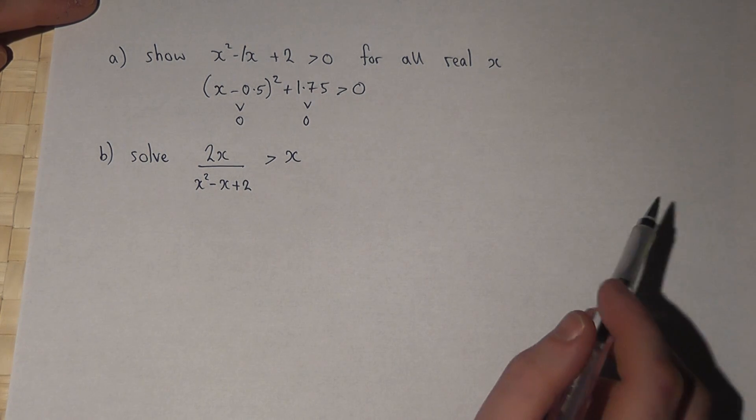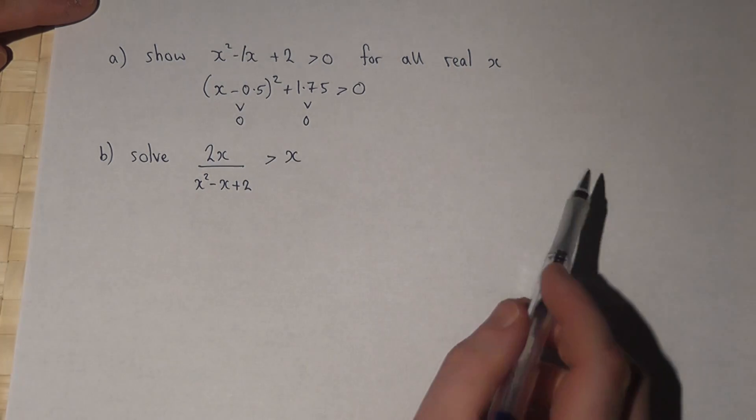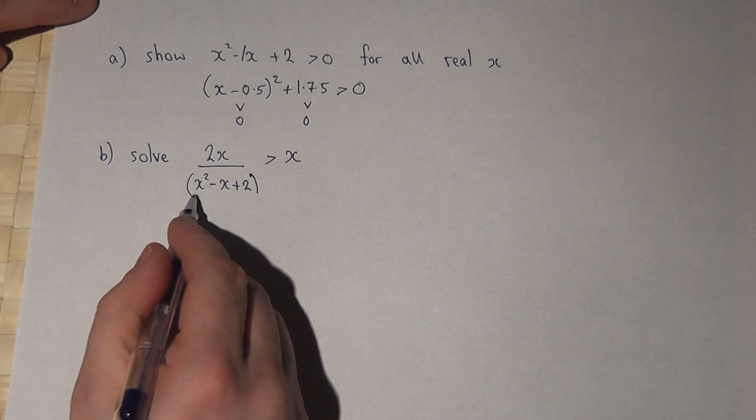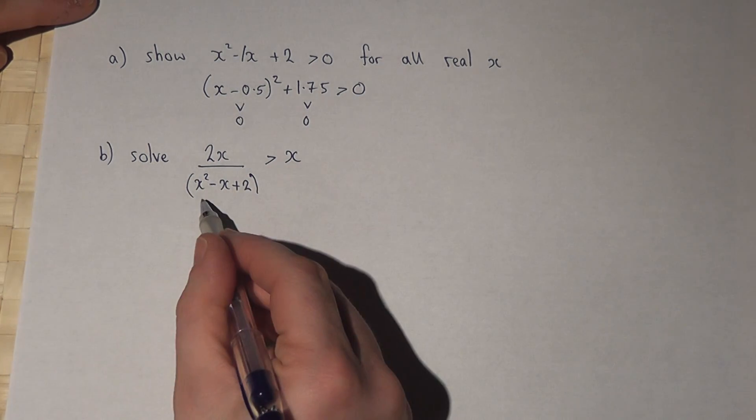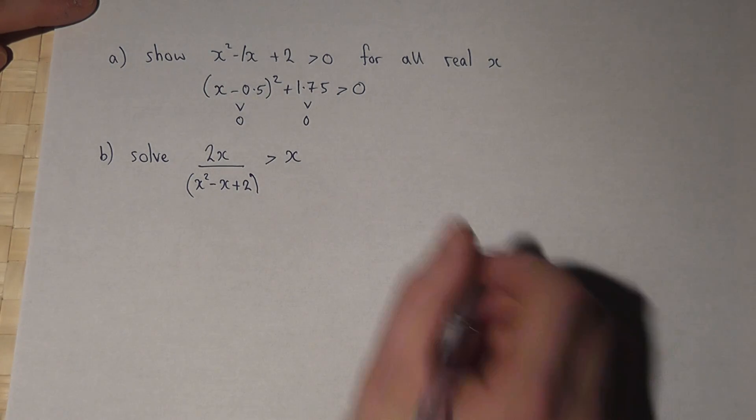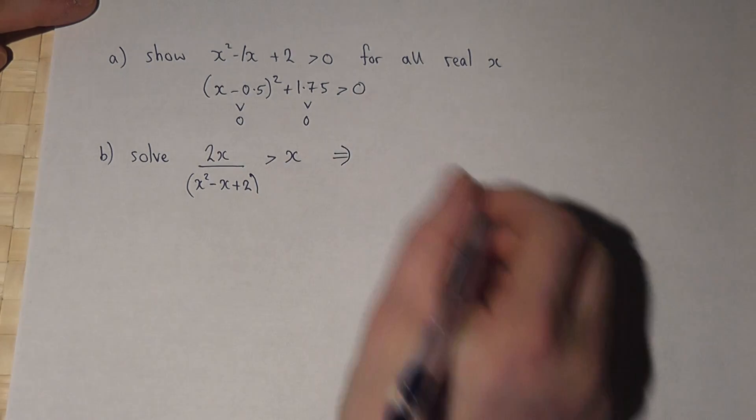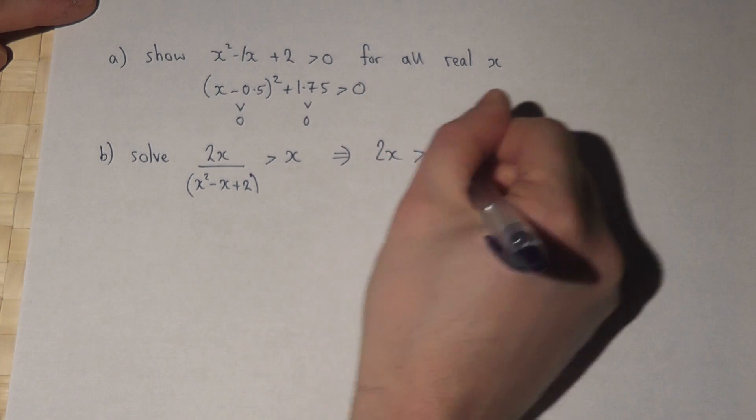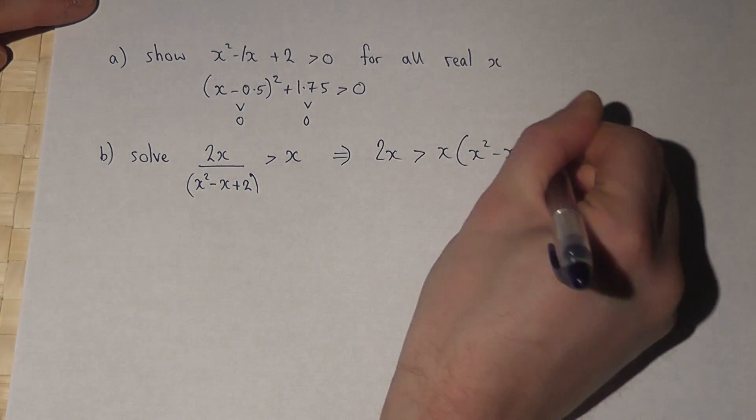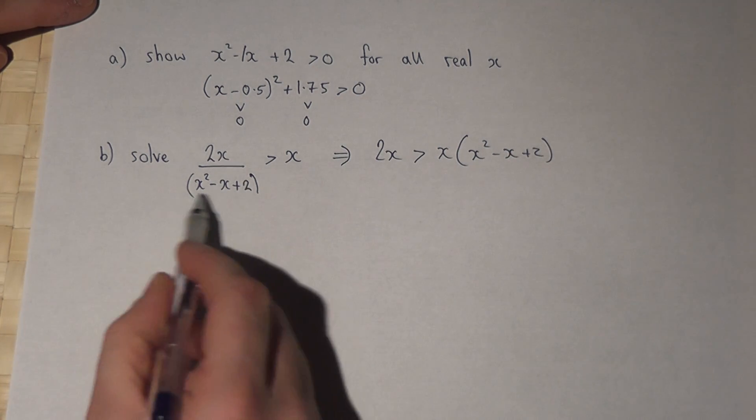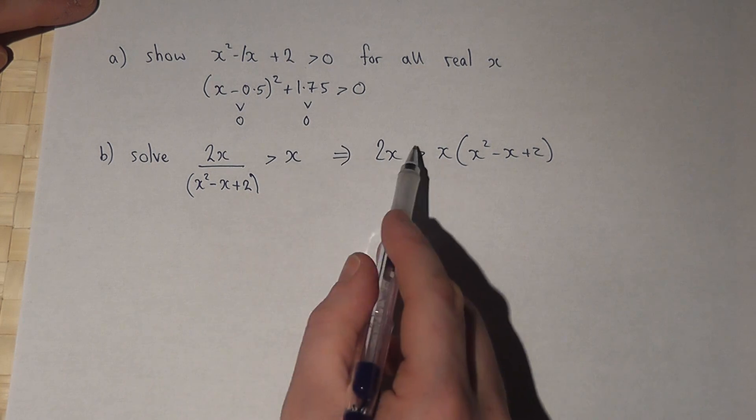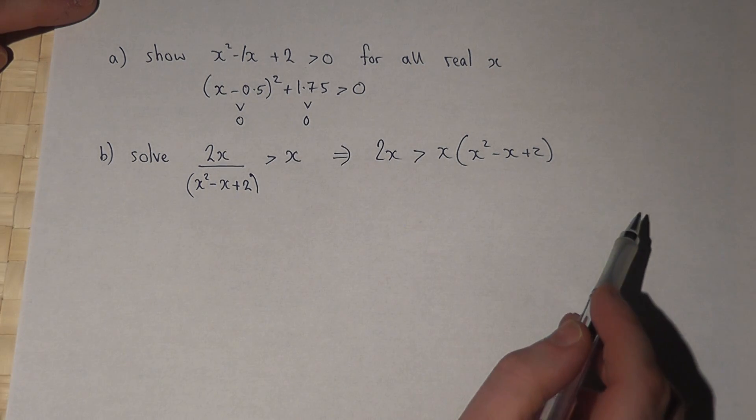Now this is useful because I can use this fact to then solve the inequality. Because I know that the bottom of this is always greater than 0, I can multiply by it without affecting the direction of the inequality. So this tells me that 2x is greater than x bracket x squared minus x plus 2. Because this part here is always greater than 0, I can multiply and not worry about the direction of the inequality.